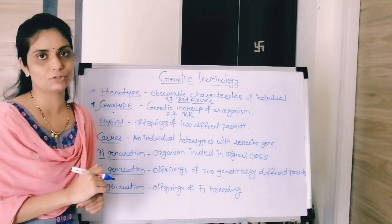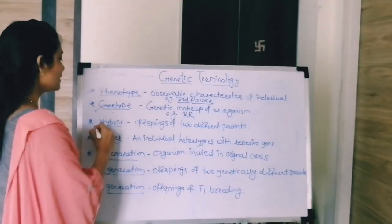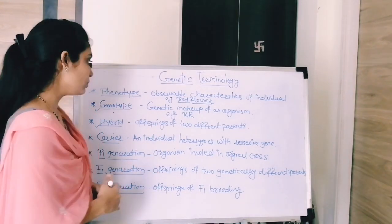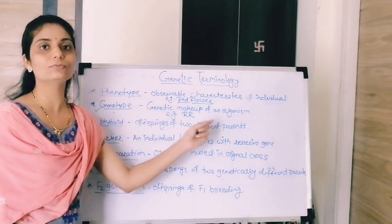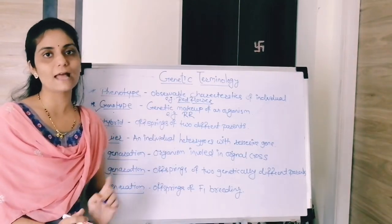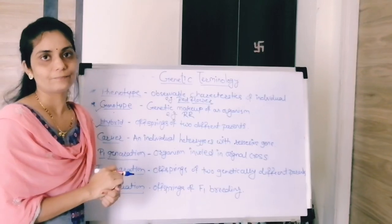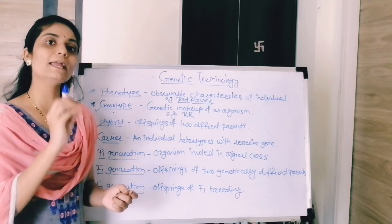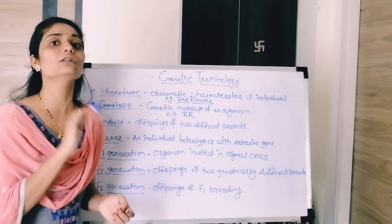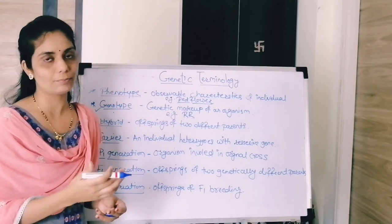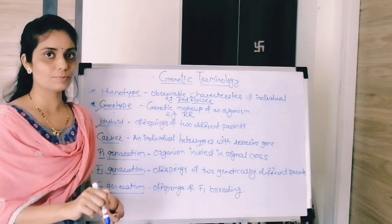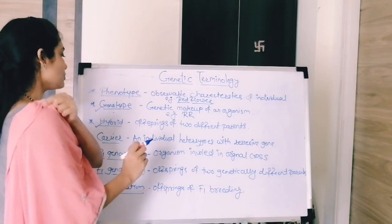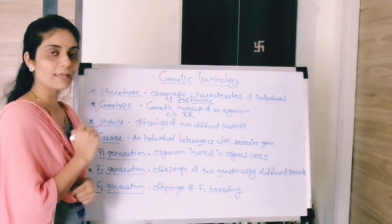Next term is hybrid. Hybrids are the offspring of two different types of organisms or two different parents. When two different types of parents make a cross between them for any particular purpose, whatever offspring we get from those different parents are called hybrids.